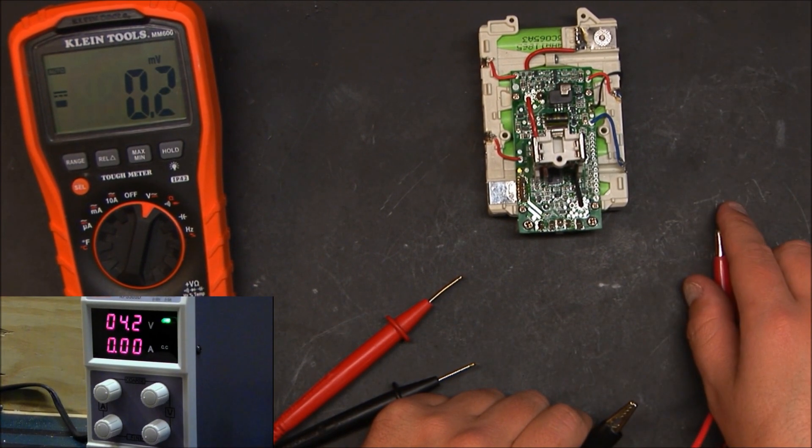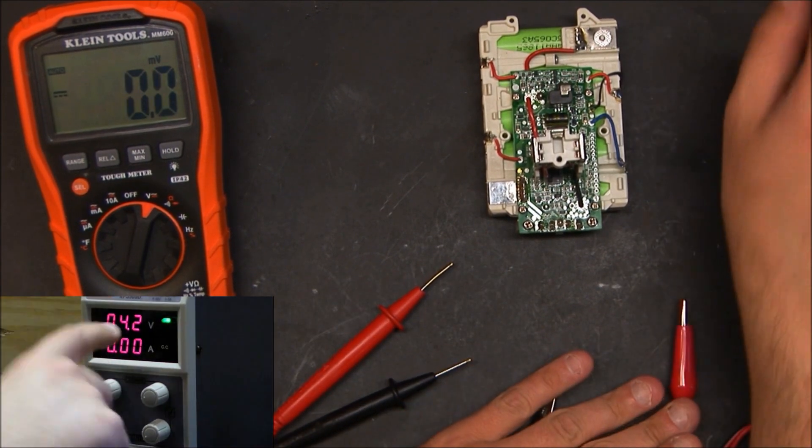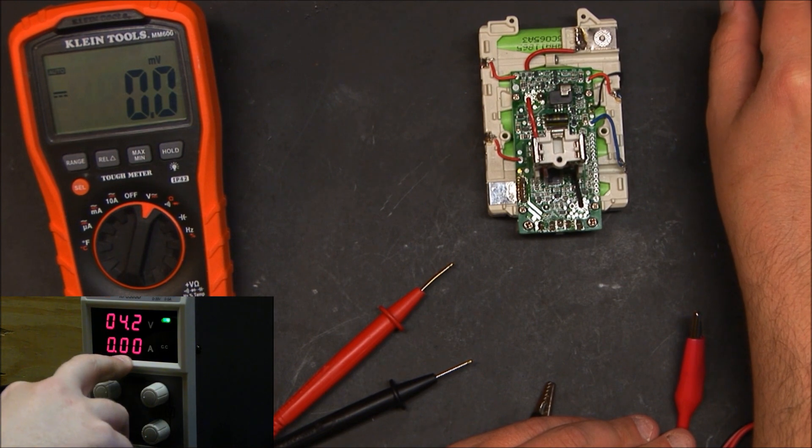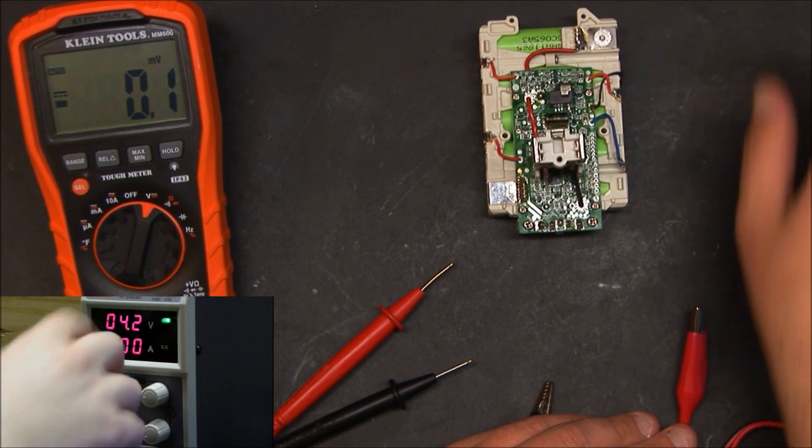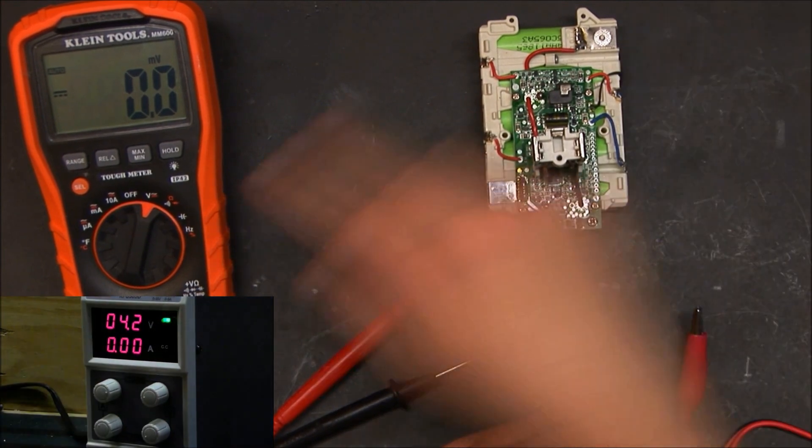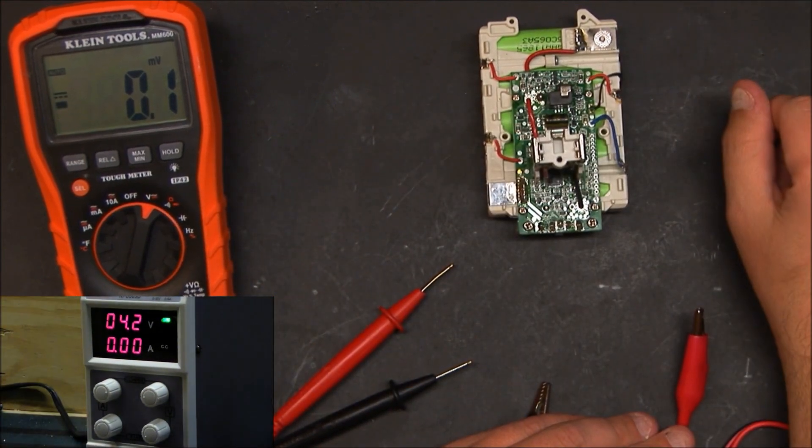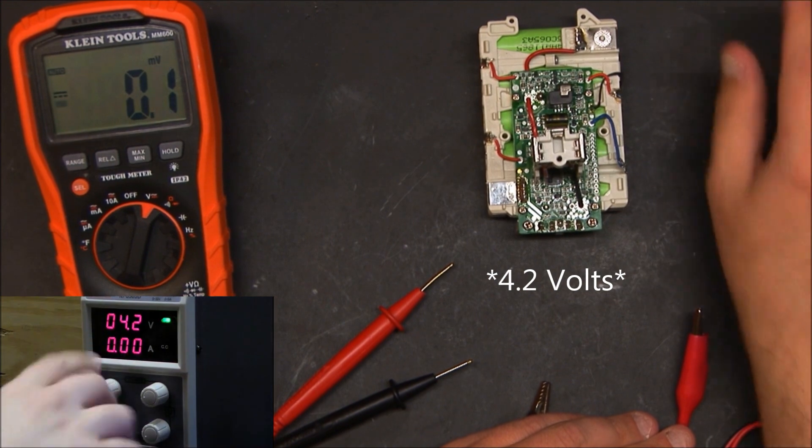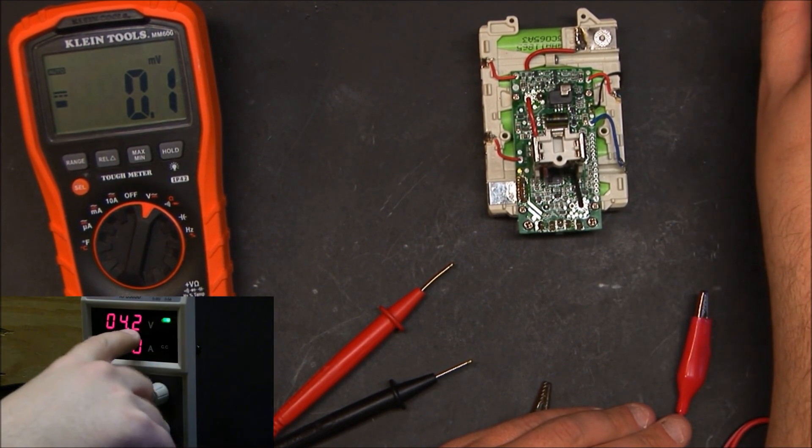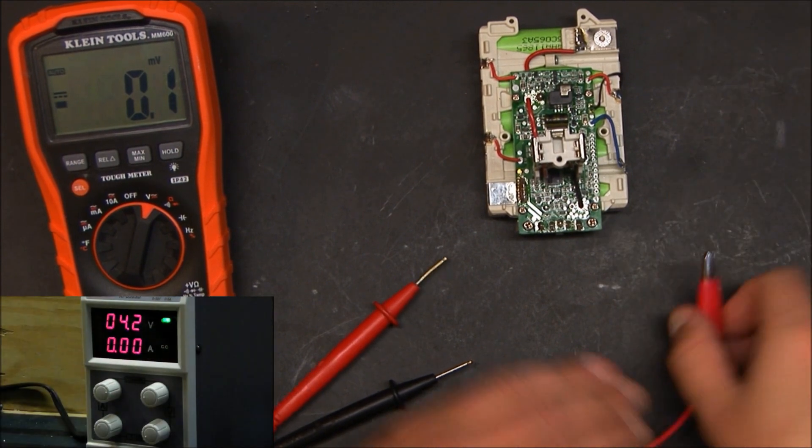This is going to put out a maximum of 3.75 amps and a maximum of 4.22 volts. When we hook this up to the battery, the voltage is going to drop and the current's going to go up to 3.75 amps. As the current in the battery increases, once it gets closer to 4.2 amps, you're going to notice the current dropping. When it gets to 4.2, it's going to switch from constant current over to constant voltage.